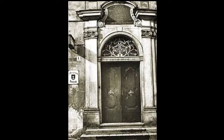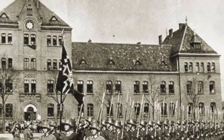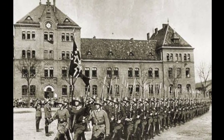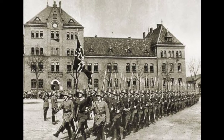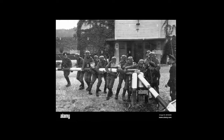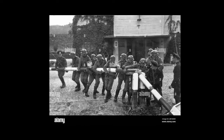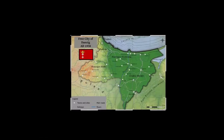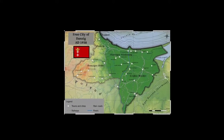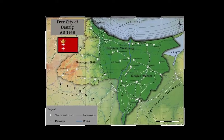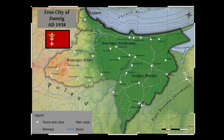By 1936, the city's senate had a majority of local Nazis, and agitation to rejoin Germany was stepped up. Many Jews fled from German antisemitic persecution and oppression. After the German invasion of Poland in 1939, the Nazis abolished the Free City and incorporated the area into the newly formed Reichsgau of Danzig-West Prussia.